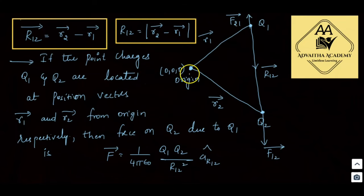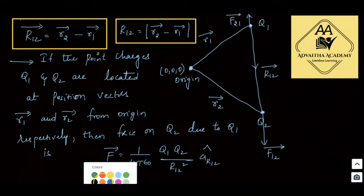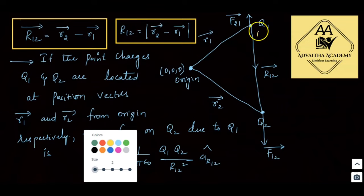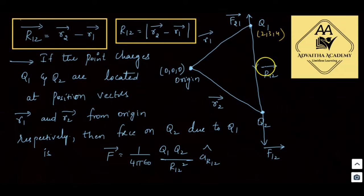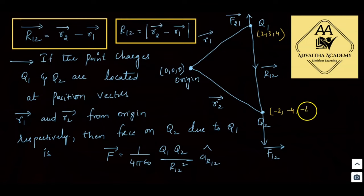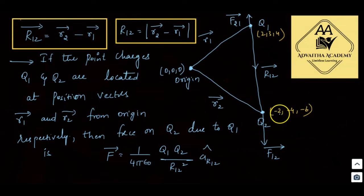In a typical problem, q1 might be at position (2, 3, 4) and q2 at (−2, −4, −6). We can find the force on q2 due to q1, or the force on q1 due to q2, using this formula with r1-bar and r2-bar as the respective position vectors from the origin.